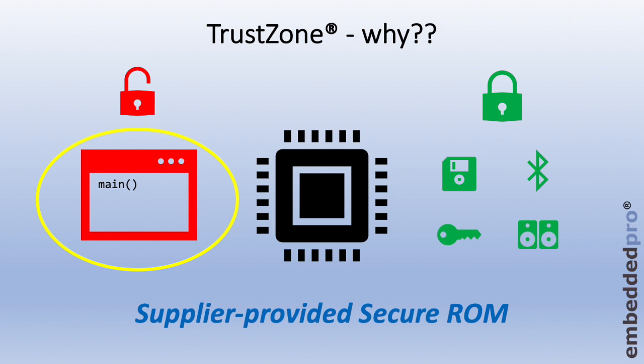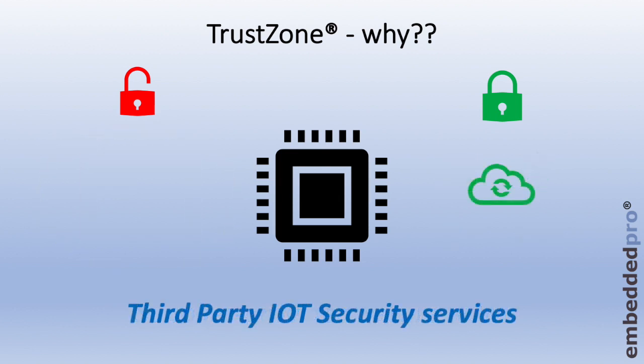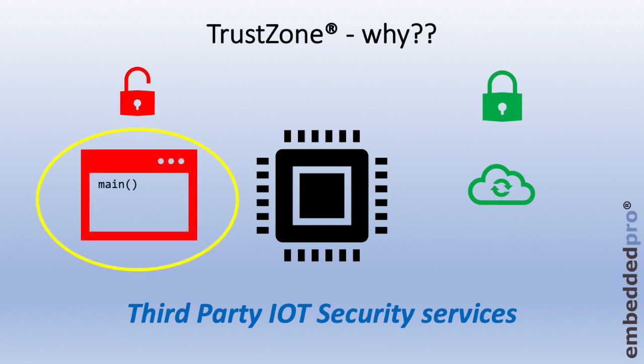But the supplier won't allow us access to read the software or reverse engineer it. Another example might be when we buy a microcontroller with a third-party software-provided IoT security service. Here I show our main software in the non-secure world, and this can make function calls into the secure IoT security services.